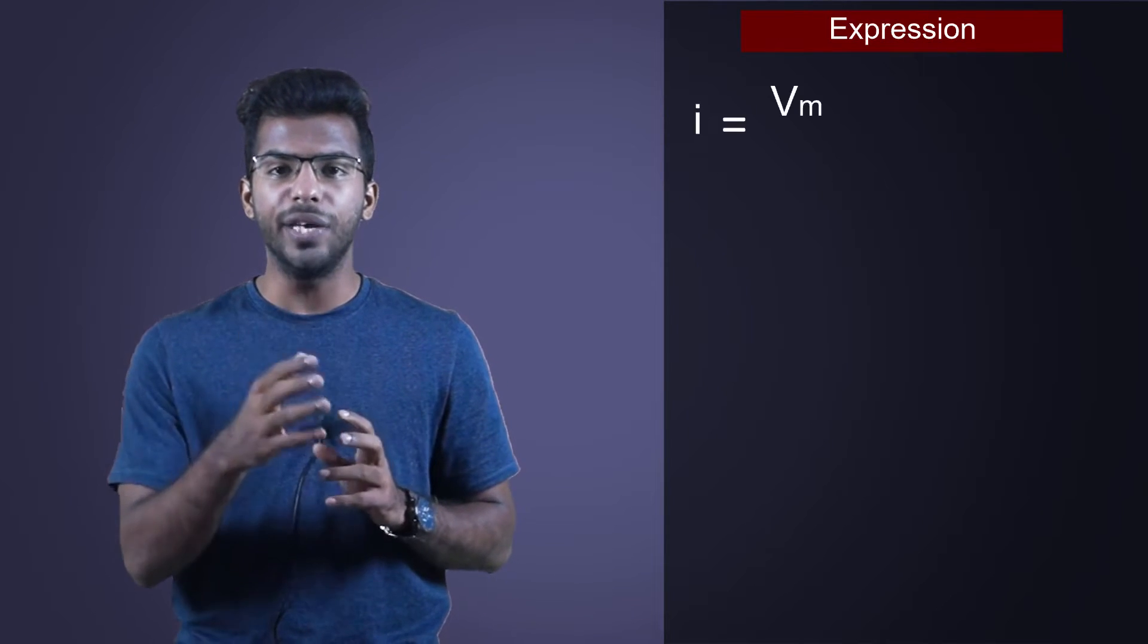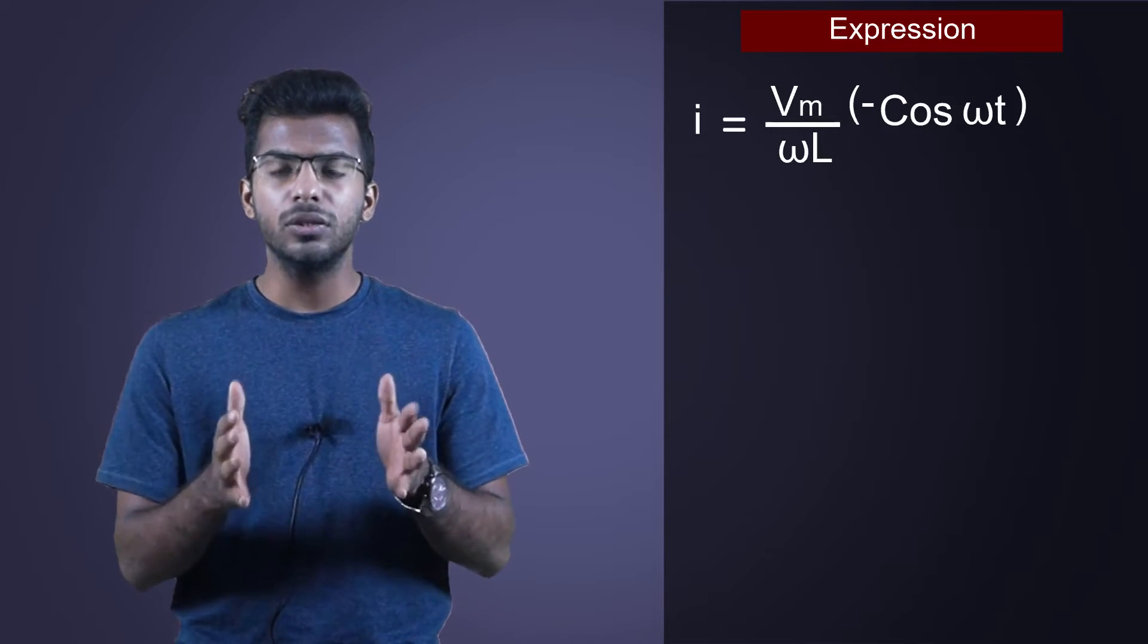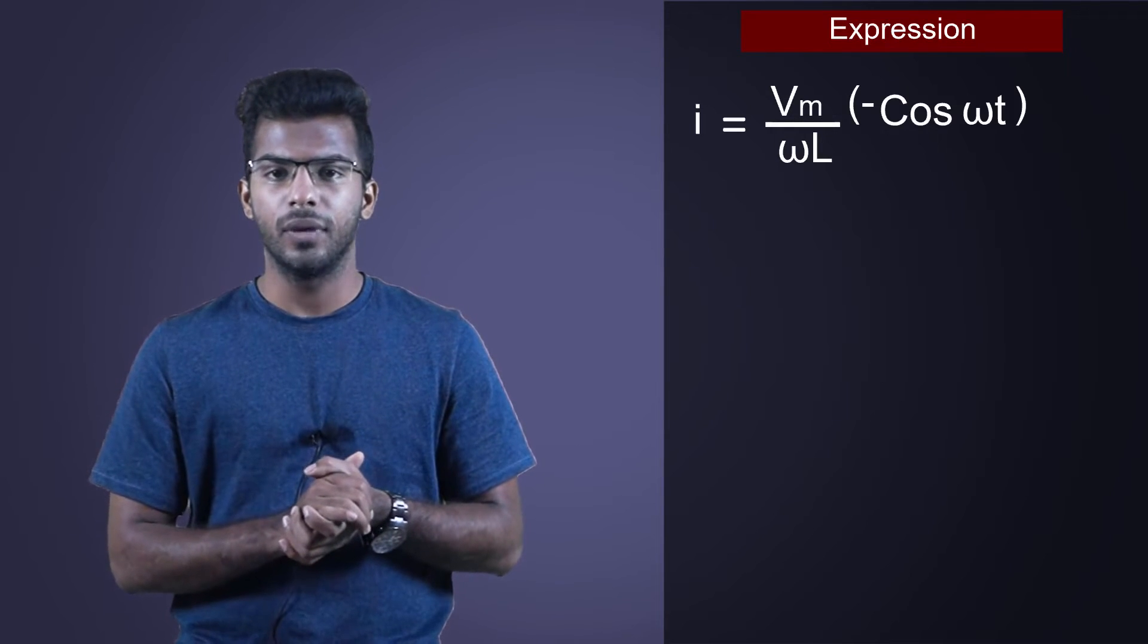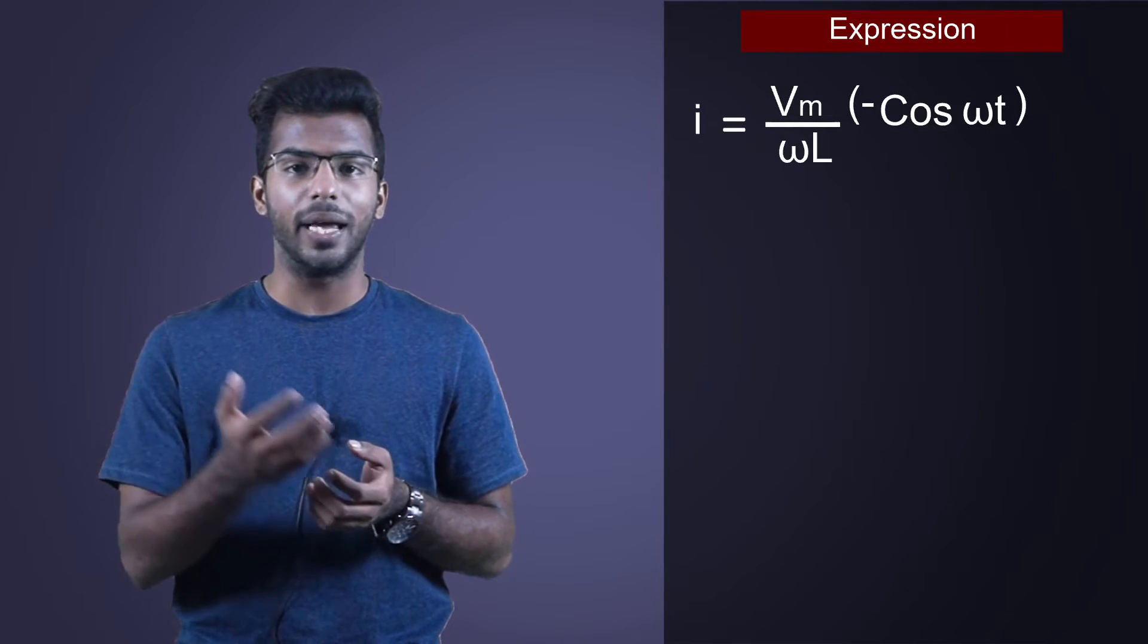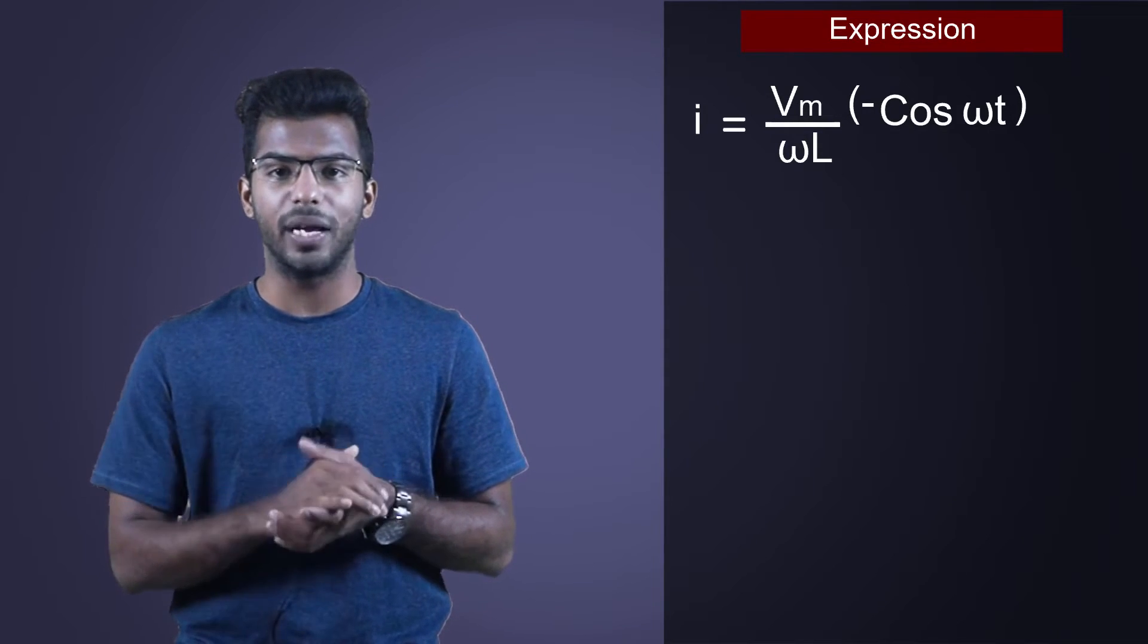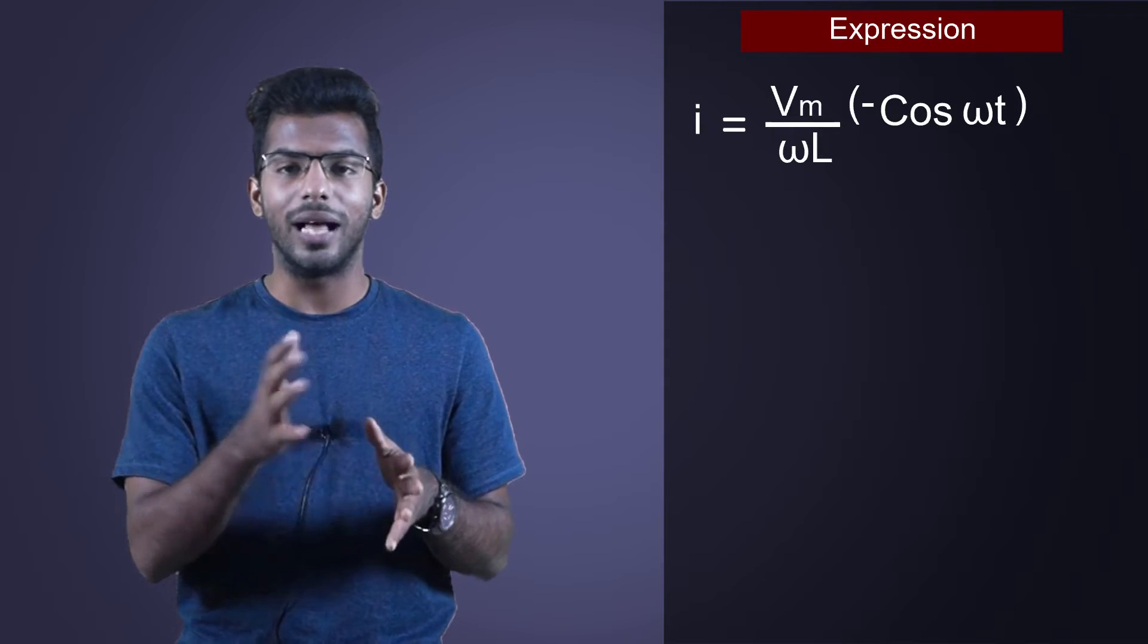On simplification, I is equal to Vm by omega L into minus cos omega t. As integral of di is I and integral of sin omega t is minus cos omega t, Vm by omega L stays out of integration as they are constants.